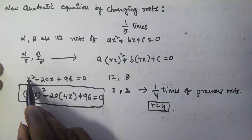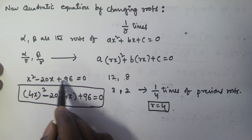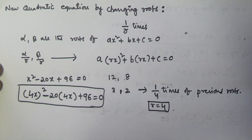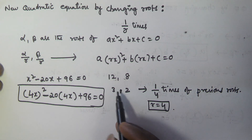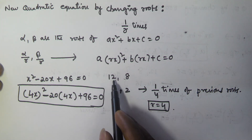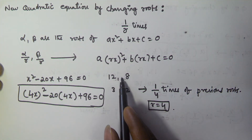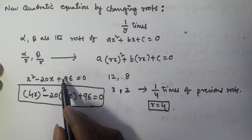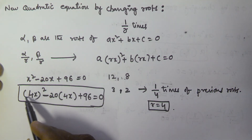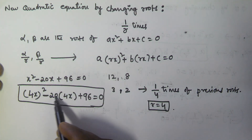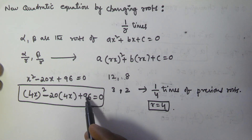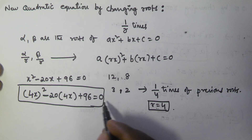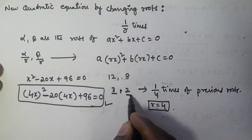For example, the roots of x squared minus 20x plus 96 equals zero are 12 and 8. To find the new quadratic equation whose roots are 3 and 2: since 3 and 2 are 1 by 4 times of the previous roots, r equals 4. Substituting, we get 4x squared minus 20 times 4x plus 96 equals zero, which is the new equation whose roots are 3 and 2.